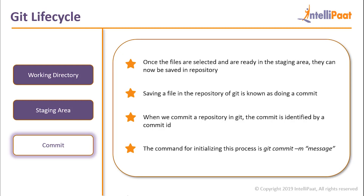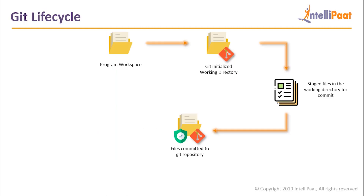Once the files are selected and ready in the staging area, we pass the command git commit and all our files will have a new commit ID attached to them and will be saved in the Git file system. Saving a file in the repository of Git is known as a commit. The commit is identified by a commit ID, and the command for this process is git commit.